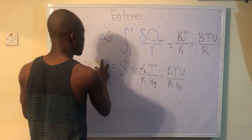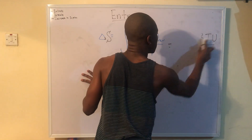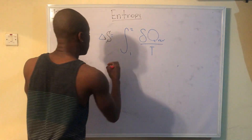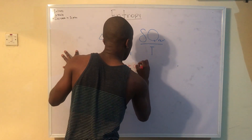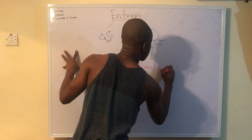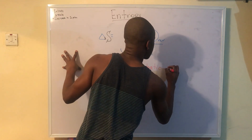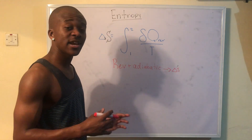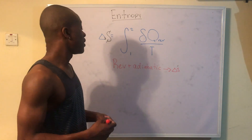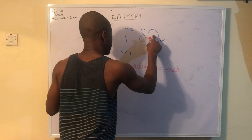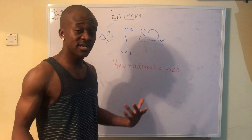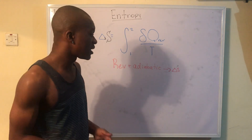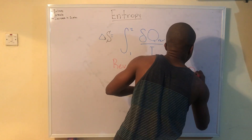Now there are some special cases that help save time when dealing with entropy. First, the reversible and adiabatic case: because the process is adiabatic, Q equals zero, so the integral of zero over T is just zero. Therefore, the change in entropy ΔS for a reversible and adiabatic cycle is zero — this is why it's called isentropic.